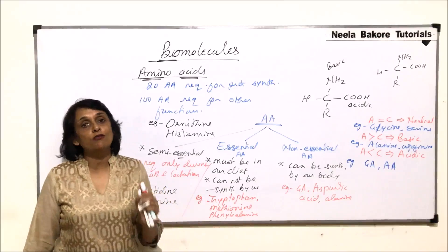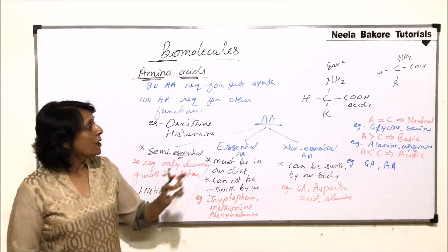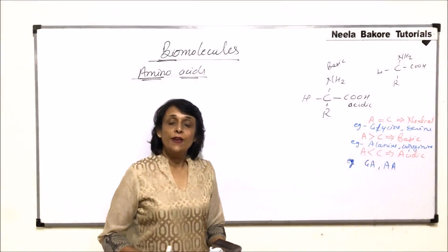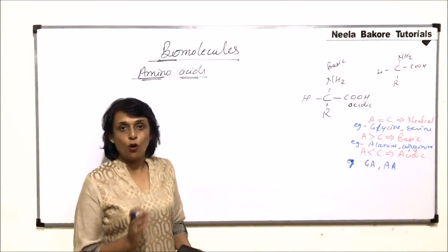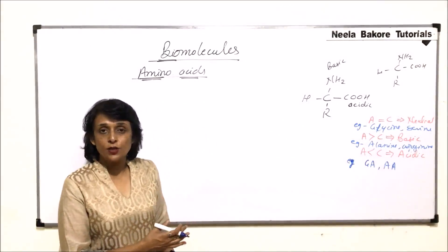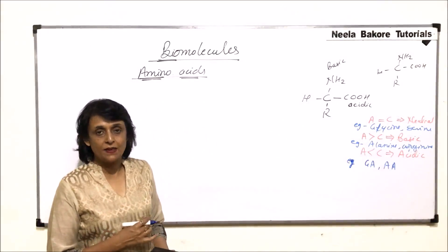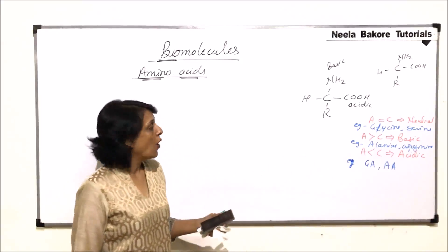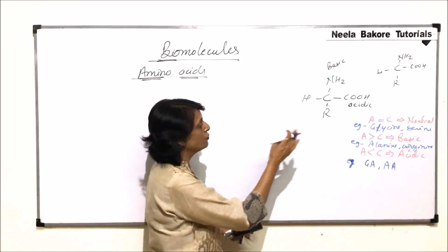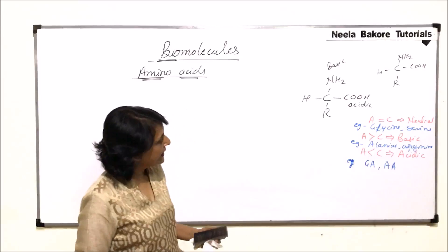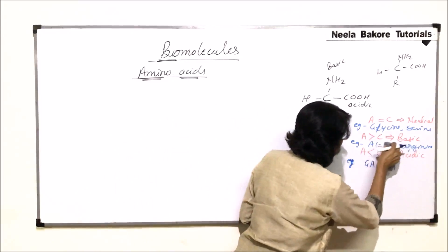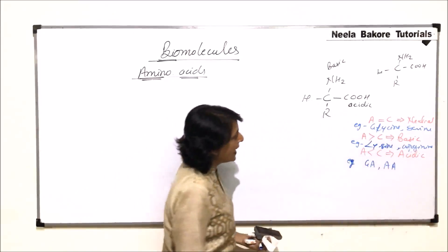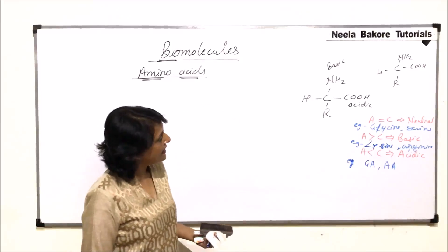We will now see the structure of three amino acids depending on what is at position R. We have seen the classification of amino acids on two criteria: essential or non-essential (with the semi-essential subcategory), and on the basis of functional groups — neutral, basic, and acidic. A correction: in the basic category, that was not alanine — it is lysine. So, lysine and arginine are basic amino acids.